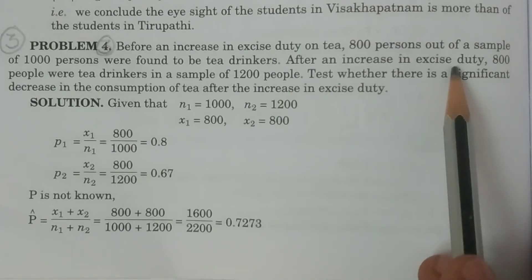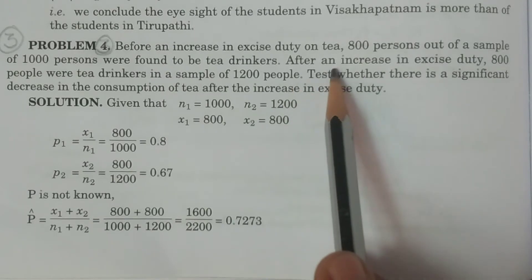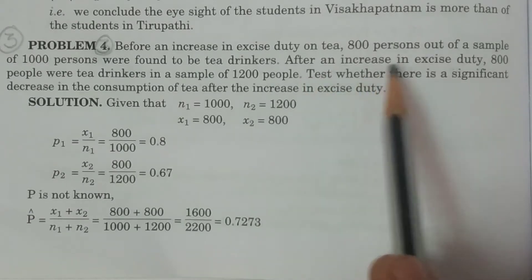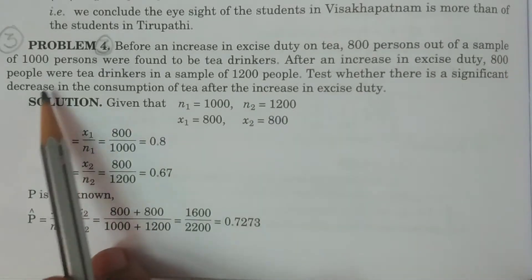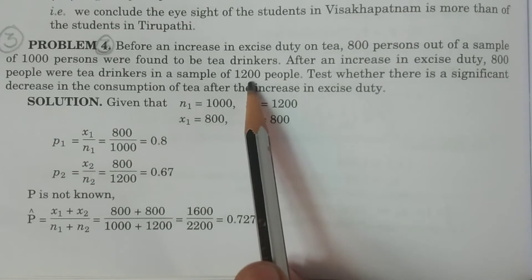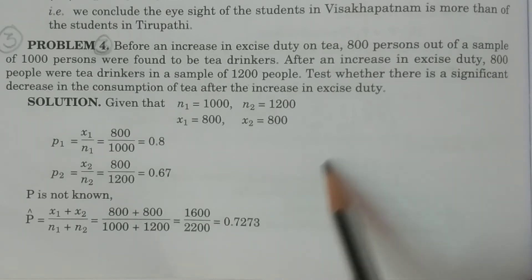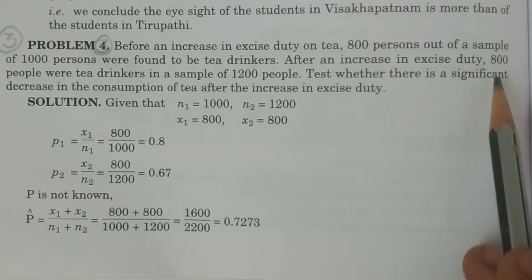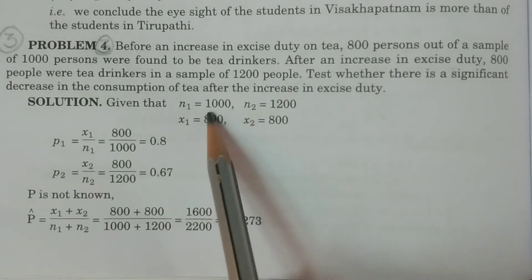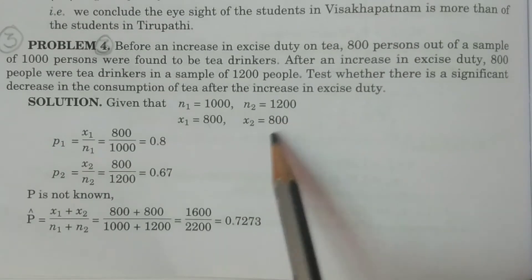After an increase in excise duty, 800 people were tea drinkers in a sample of 1200 people. That is, n2 is equal to 1200 and x2 is equal to 800. So n1 is 1000, x1 is 800, n2 is 1200, and x2 is 800.